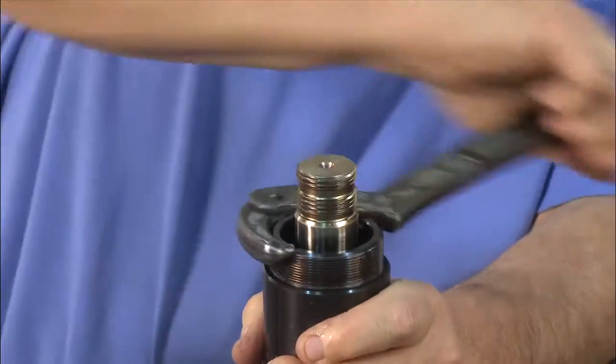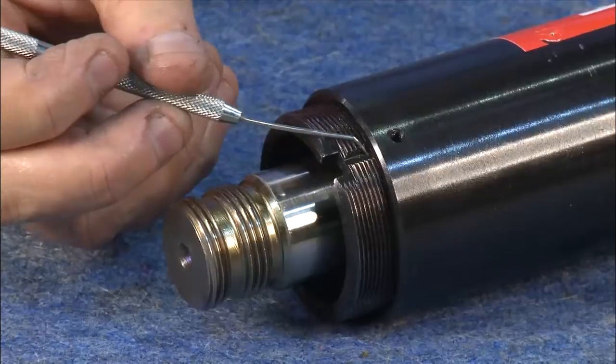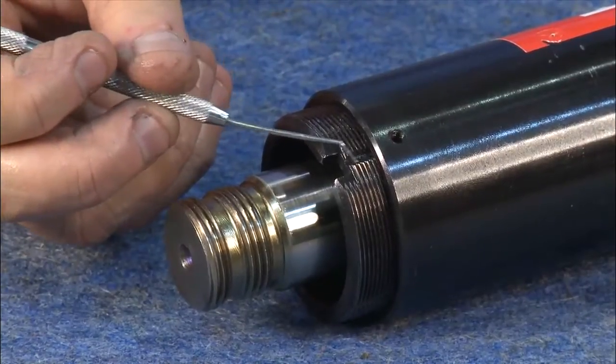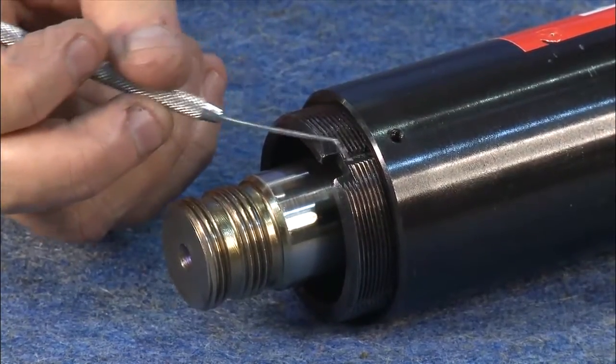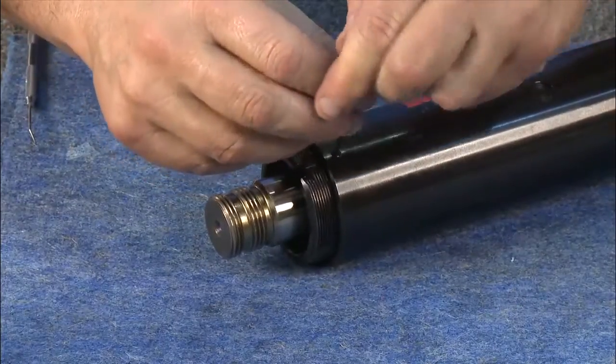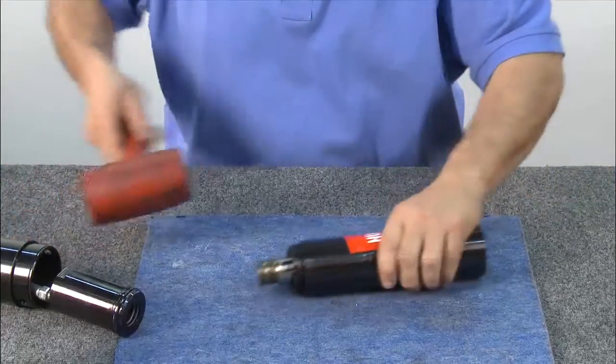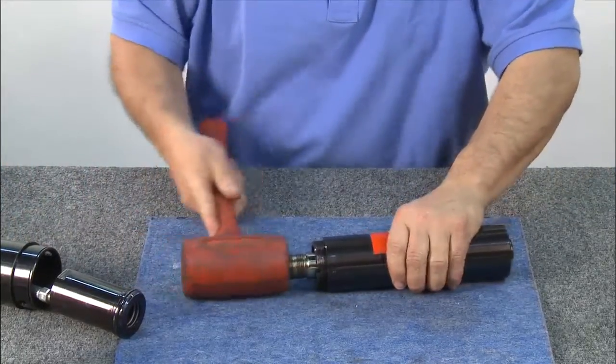Continue threading using a spanner wrench until the front gland is completely installed. Next, thread the front gland back out until it lines up with one of the grooves for the set screws, then tighten the set screw to lock the gland in position.